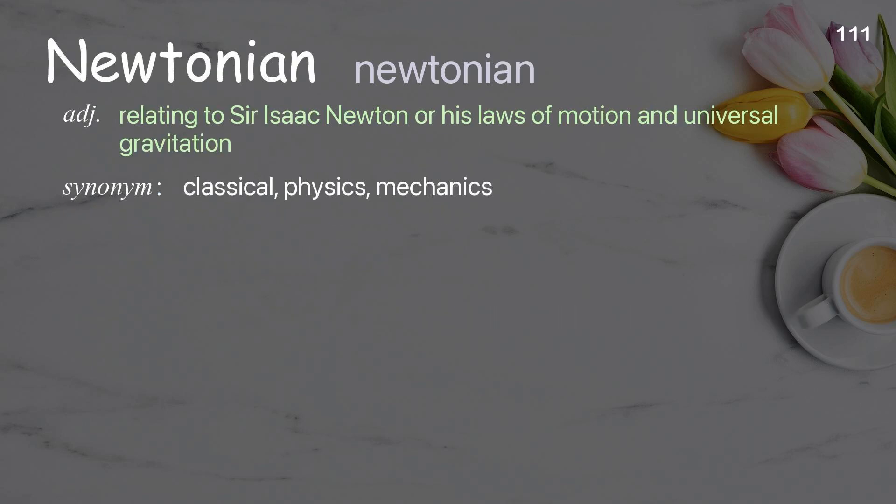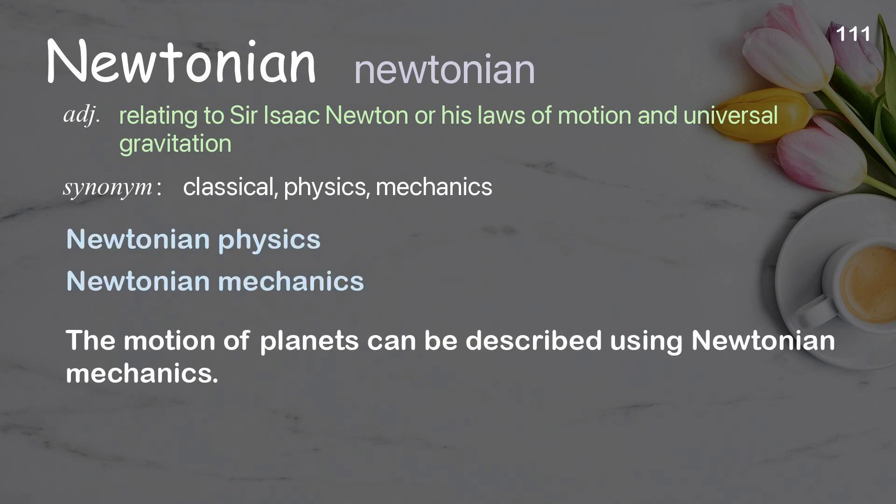Newtonian: relating to Sir Isaac Newton or his laws of motion and universal gravitation. Examples: Newtonian physics; Newtonian mechanics. The motion of planets can be described using Newtonian mechanics.